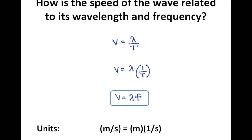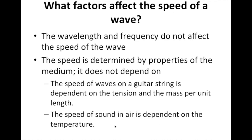Let's check the units. Speed is in meters per second if your wavelength is in meters. Frequency has units of 1 over seconds. So multiplying meters by 1 over seconds gives meters per second, which matches the left-hand side. What factors affect the speed of a wave? The wavelength and frequency do not affect the speed — you can calculate speed if you know those, but they don't cause the speed. The speed is determined by properties of the medium; it does not depend on wavelength and frequency.